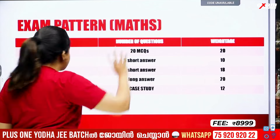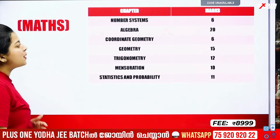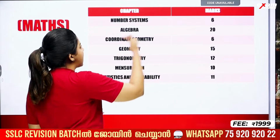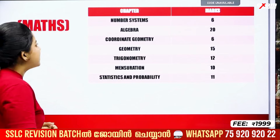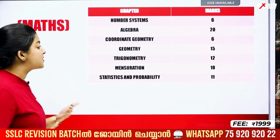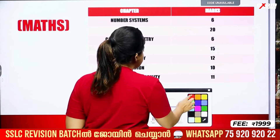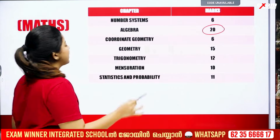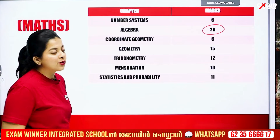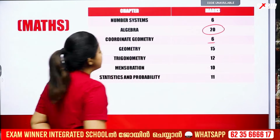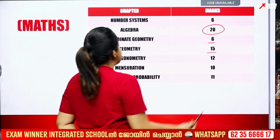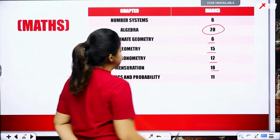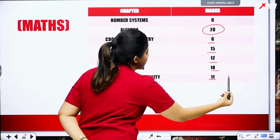We will learn a few sections. These are the marks. For Maths, we will look at the number of weightages because the number of systems is 15. We have 20 marks. All the weightages — the marks: coordinate geometry is 6 marks, geometry is 15 marks, trigonometry is 12, mensuration is 10, statistics and probability is 11.